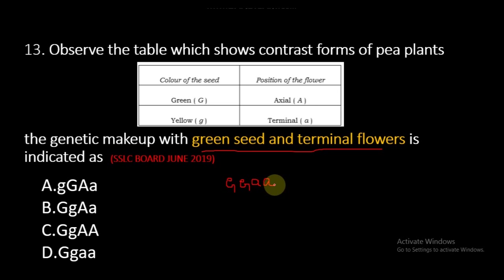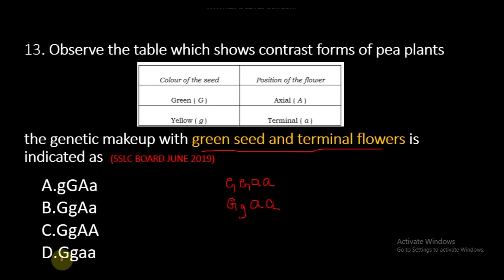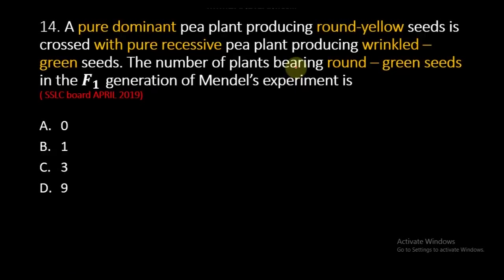There is another possible genetic makeup: capital G and small g — since the dominant character G means the plant color will still be green seed. Terminal flower means both must be recessive, so both small a. Checking the options, capital G small g small a small a is present. So this indicates the genetic makeup of green seed and terminal flower.